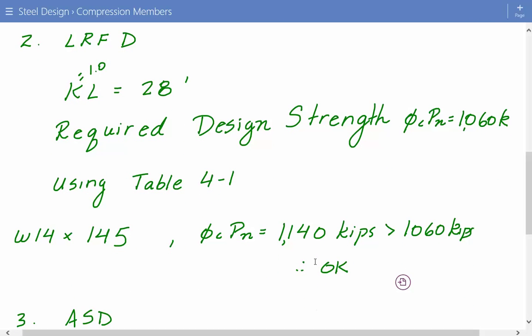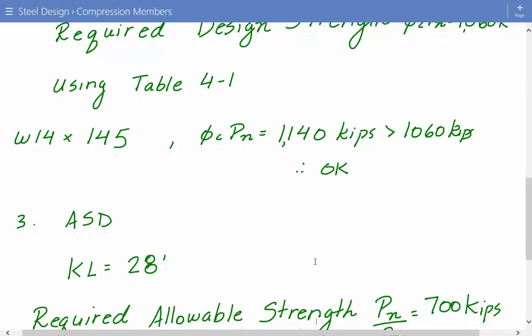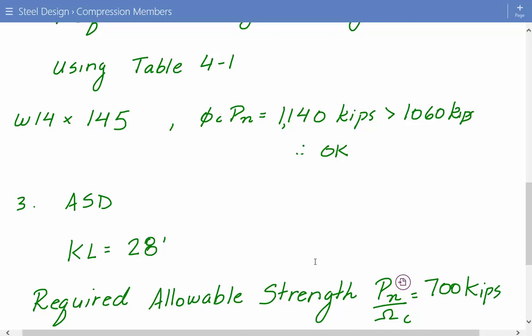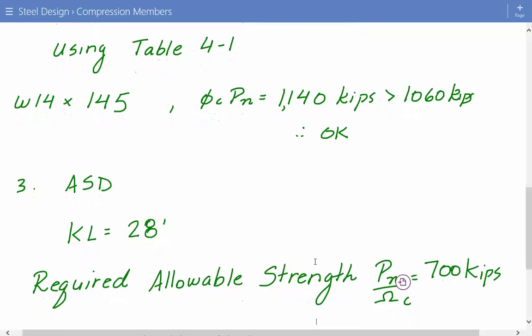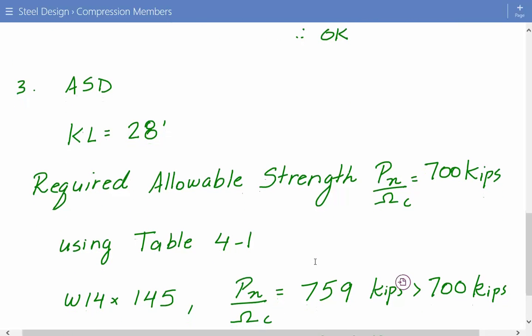Now we'll do the same thing for ASD. We know our effective length is 28 feet, and the minimum allowable strength we need for this member per ASD is 700 kips. Again, we go back to table 4-1 and look at W14.